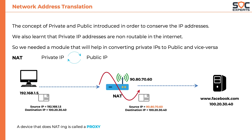A device that does NATing is called a proxy. One should understand that network address translation is not a network device — it's a module in most networking devices, like a router in the above example.